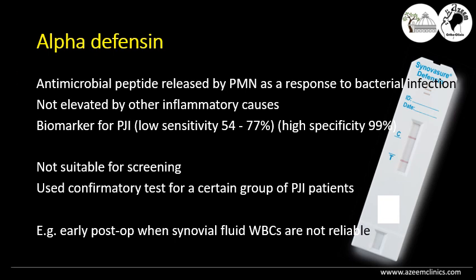A new diagnostic tool is alpha-defensin, which is a protein released from polymorphonuclears in response to bacterial infection and is not elevated in other inflammatory causes. It is now used as a biomarker for periprosthetic infection. However, it has high specificity but only moderate sensitivity, making it not suitable for screening. It is currently used in the early postoperative period when synovial fluid white blood cell count is not reliable.